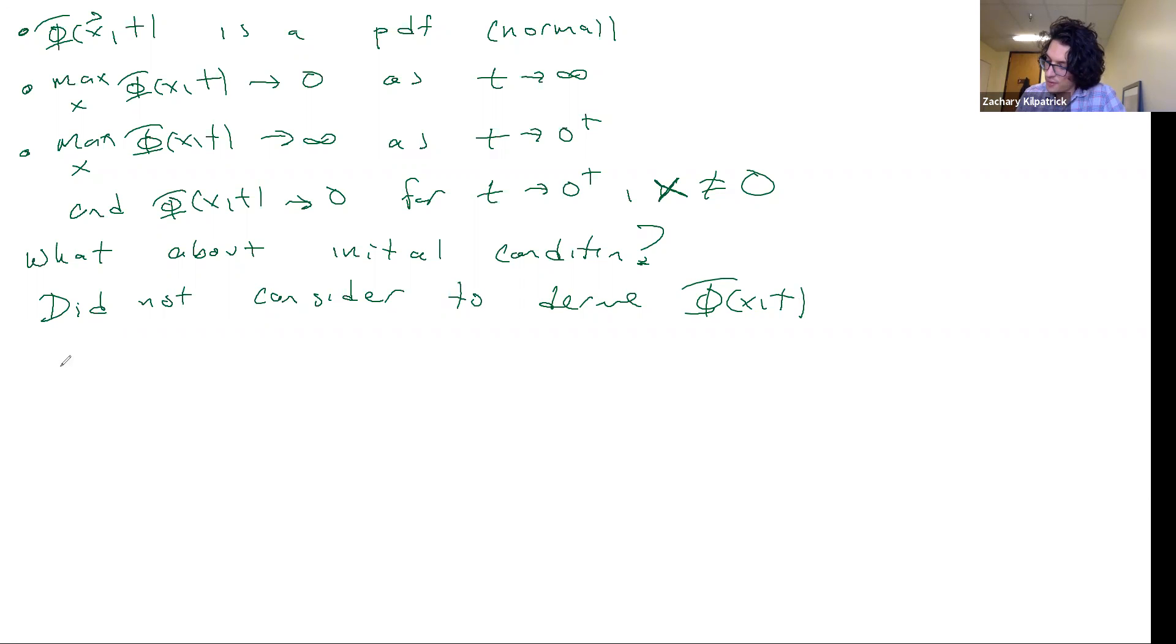So what we have is we have a symmetric solution with phi of X,T goes to the delta distribution as T goes to zero from above.